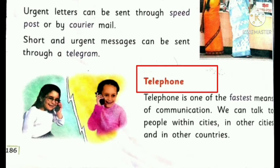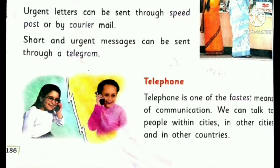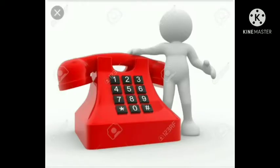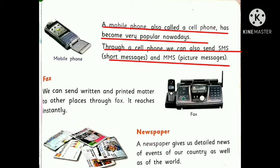The second means of communication is the telephone. It is one of the fastest means of communication. We can talk to people within cities, in other cities, and in other countries through the telephone. We can talk to people living at far away places. We can also send SMS — that is short messages — and MMS, which are picture messages.